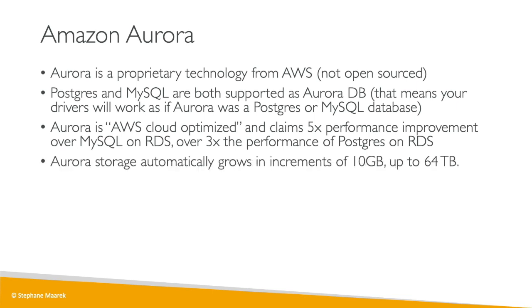Aurora storage automatically grows, and this is one of the main awesome features. You start at 10 gigabytes, but as you put more data into your database, it grows automatically up to 64 terabytes. The great thing is that as a DB admin or SysOps, you don't need to worry about monitoring your disk — you just know it will grow automatically over time.